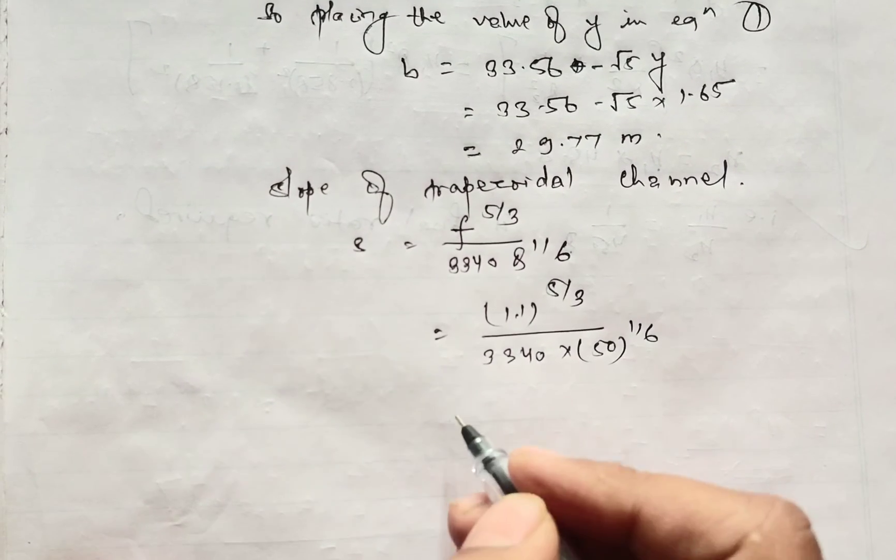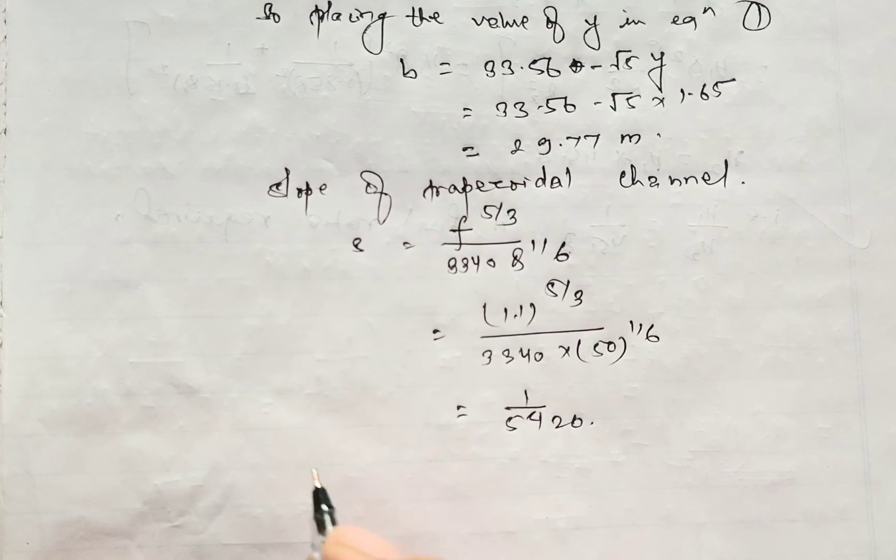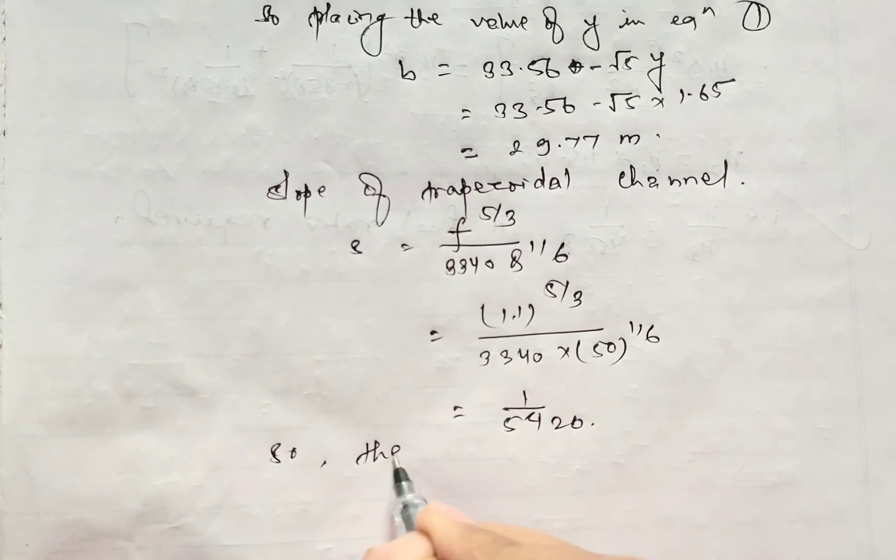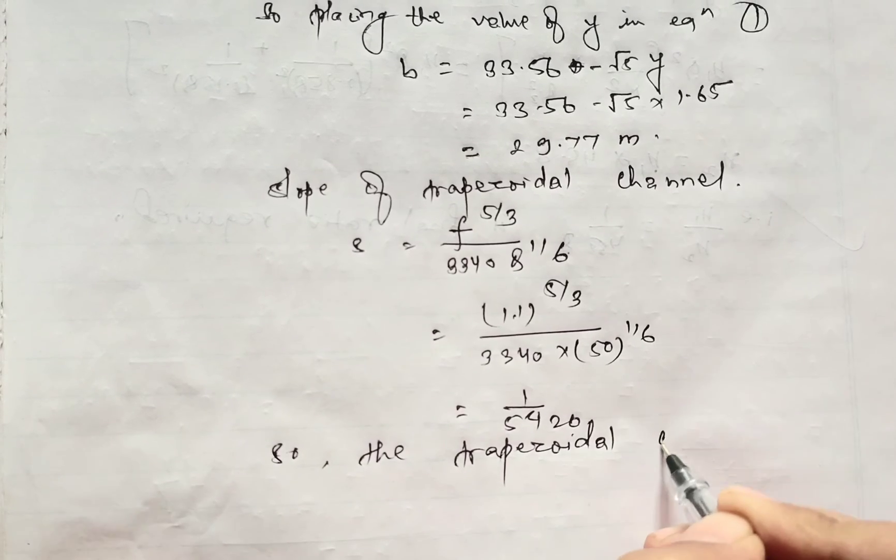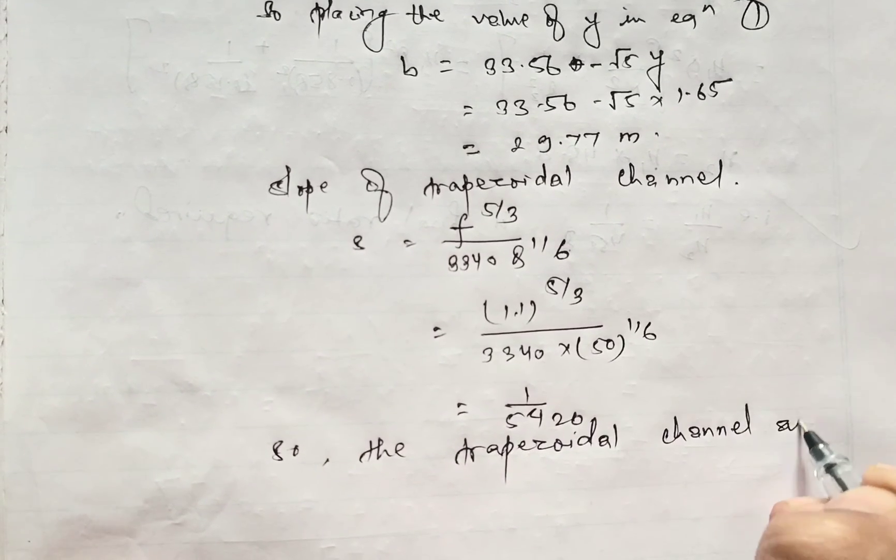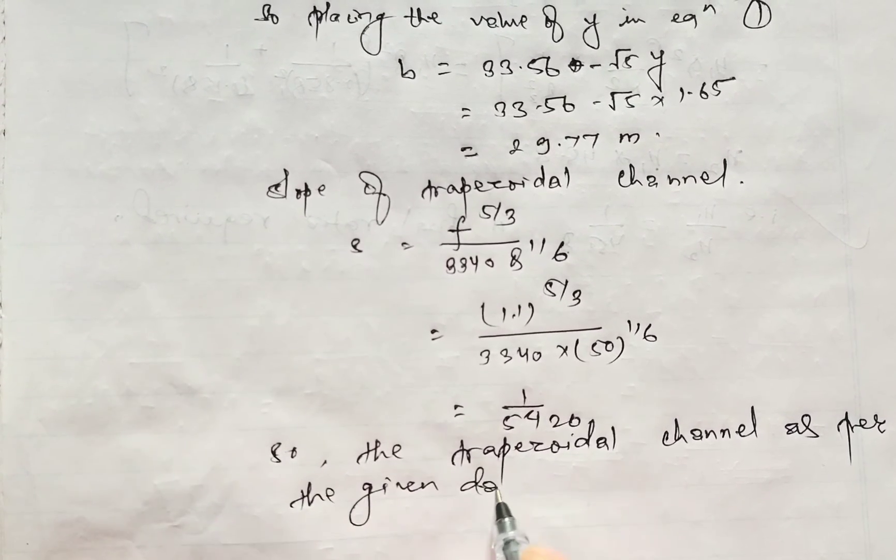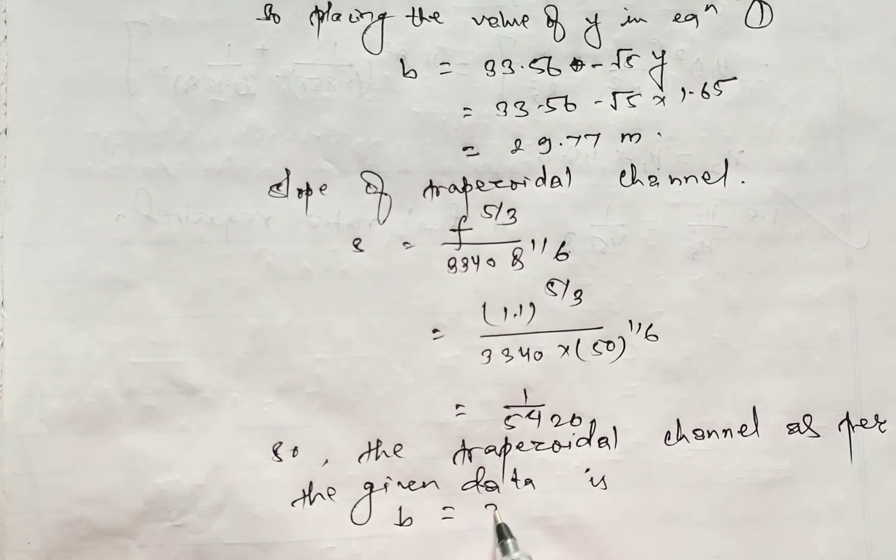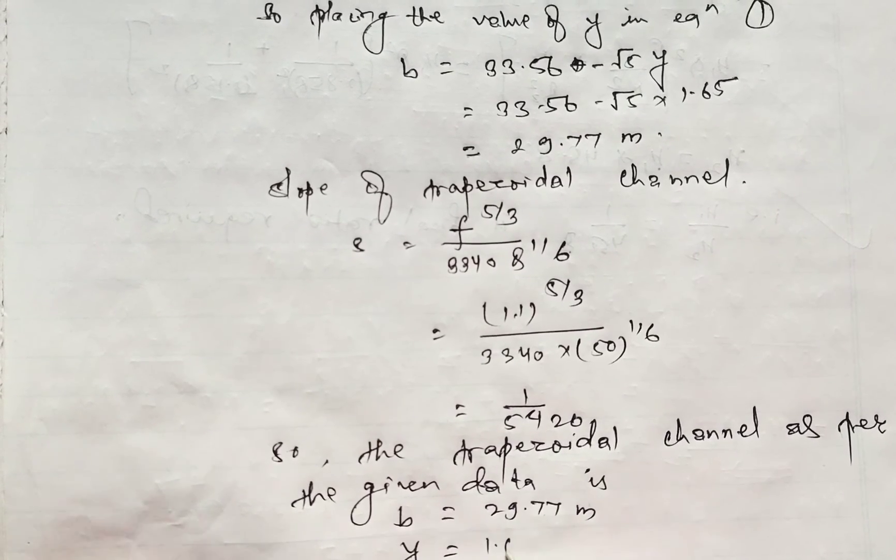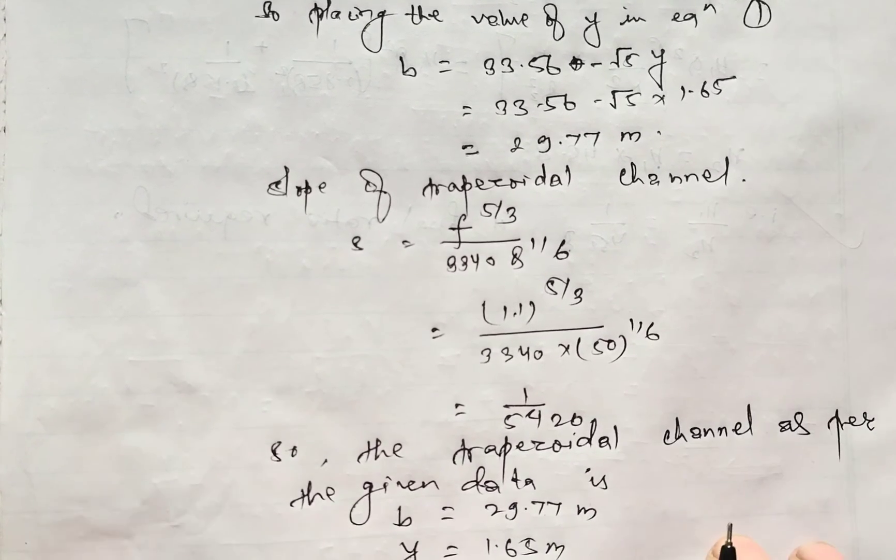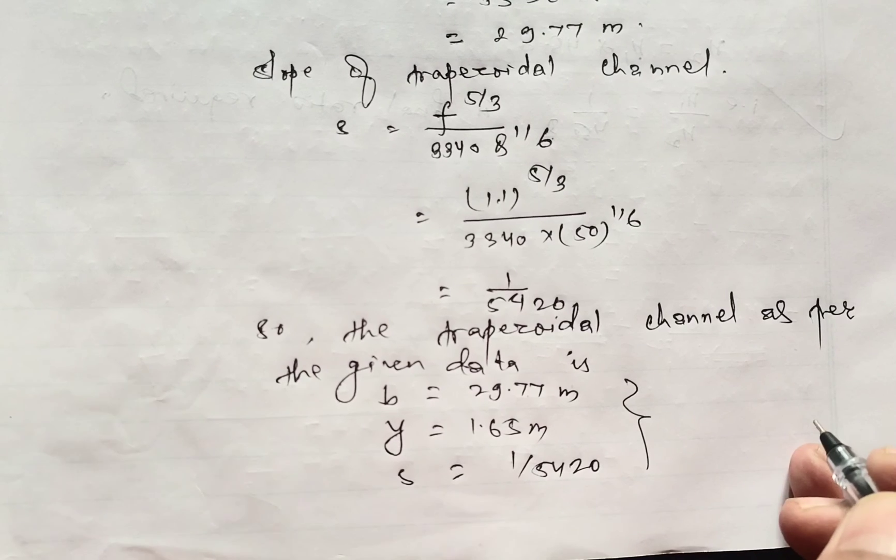On solving this, the result will be 1 by 5420. So the final data is: B equals 29.77 meter, Y equals 1.65 meter, S equals 1 by 5420. This is the final answer.